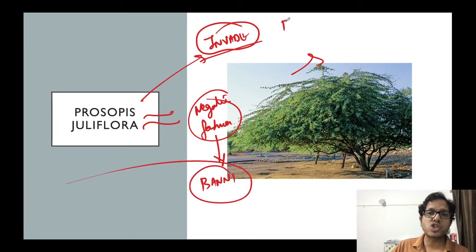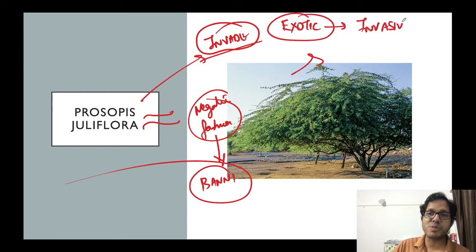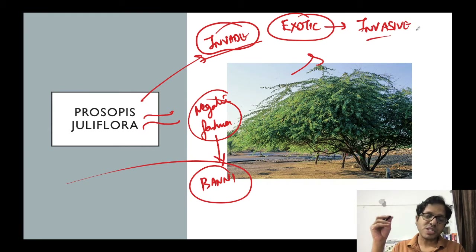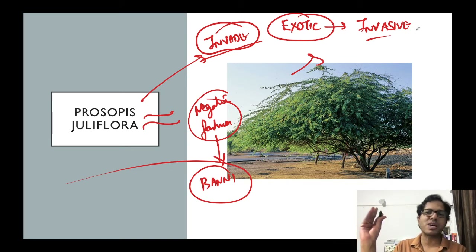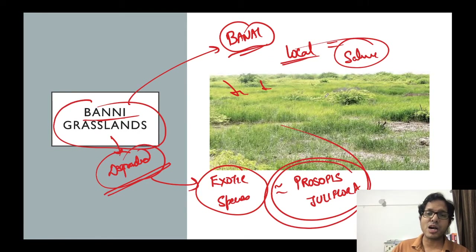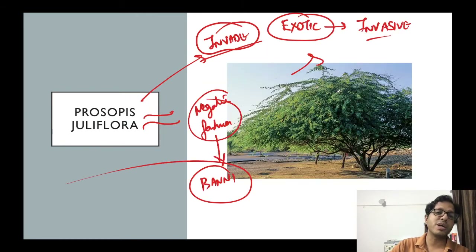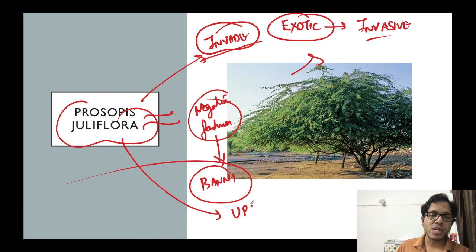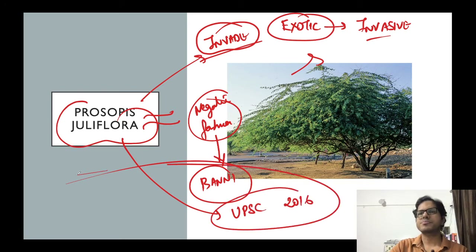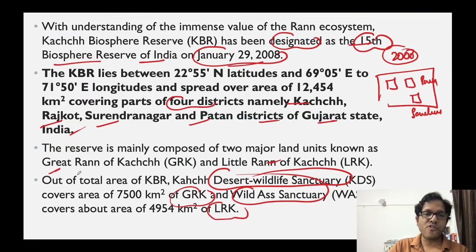This is the classic example: an exotic species was brought in, and it invaded and converted into an invasive species. The definition of invasive species: it is eliminating local species and re-establishing itself. Banni Grasslands were sprawling with rich grasses, and they are disappearing because of Gandha Babool, that is Prosopis juliflora. UPSC asked this question in 2016 Prelims.